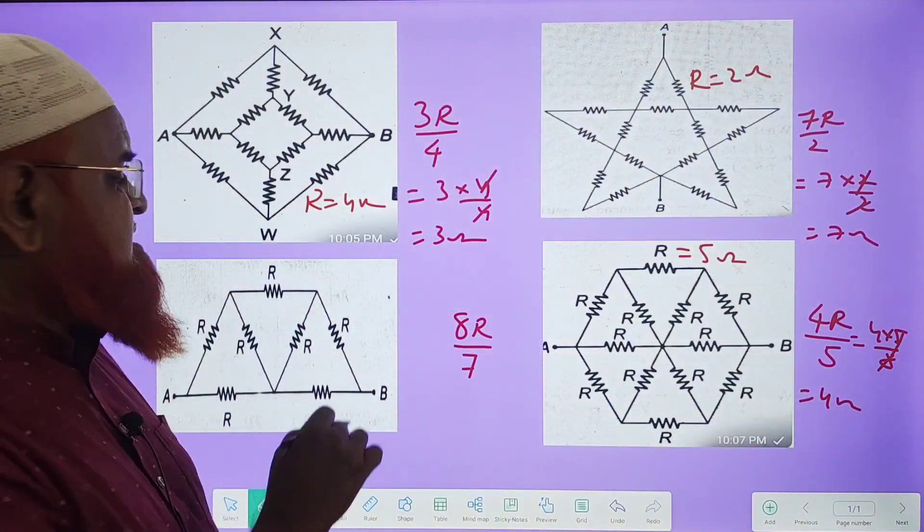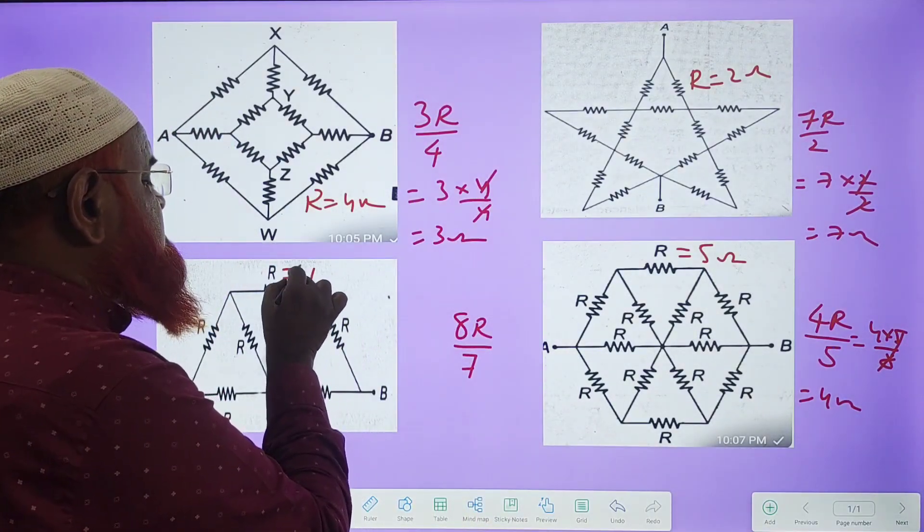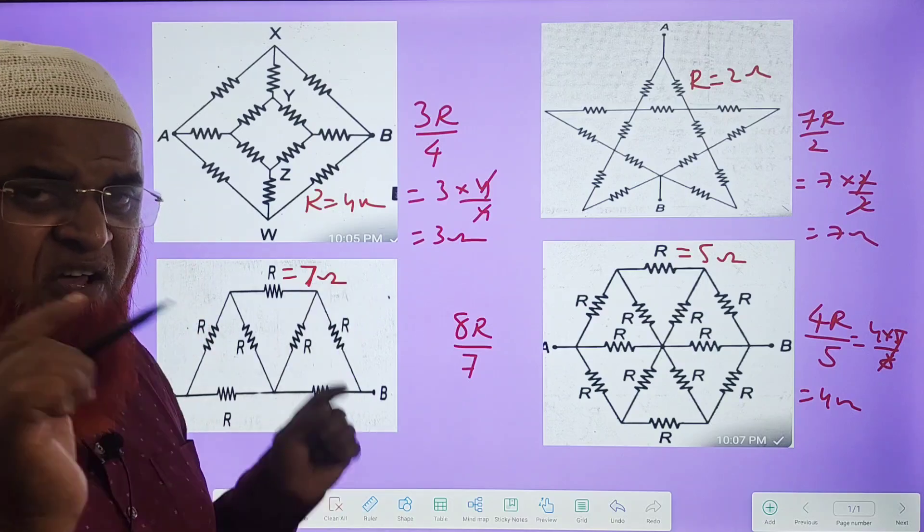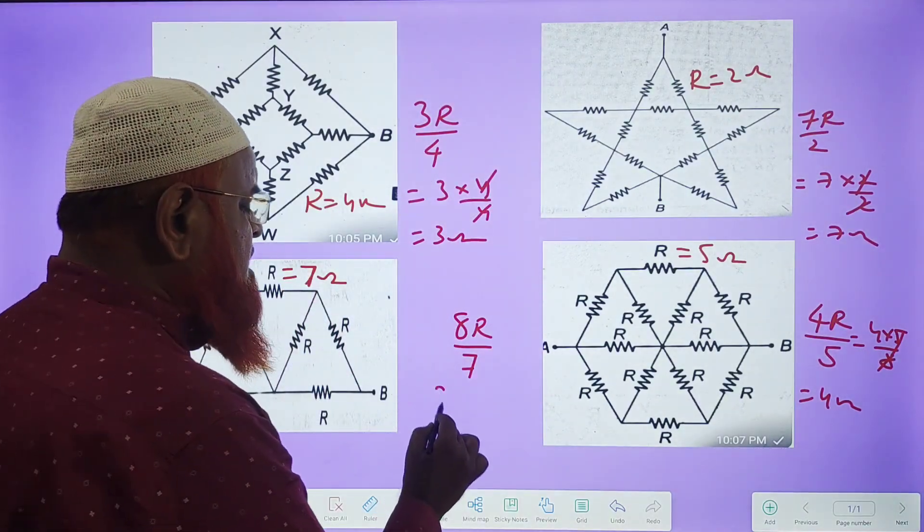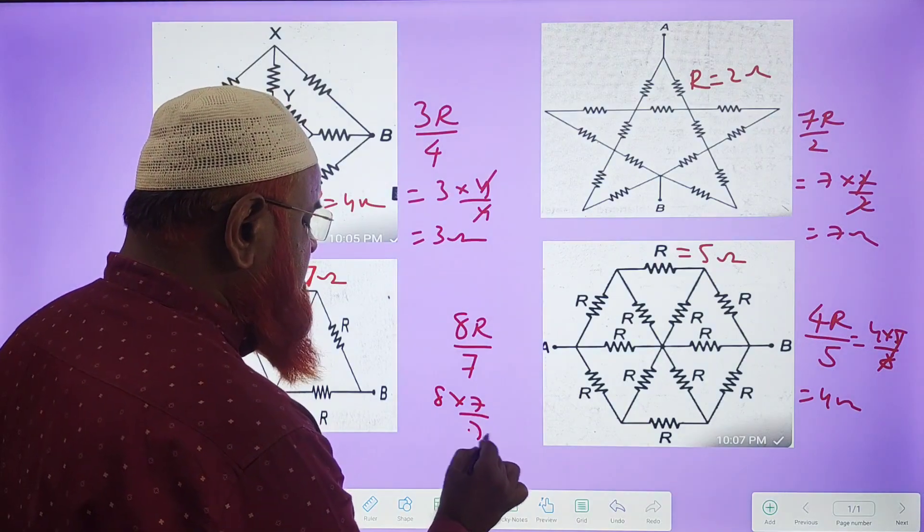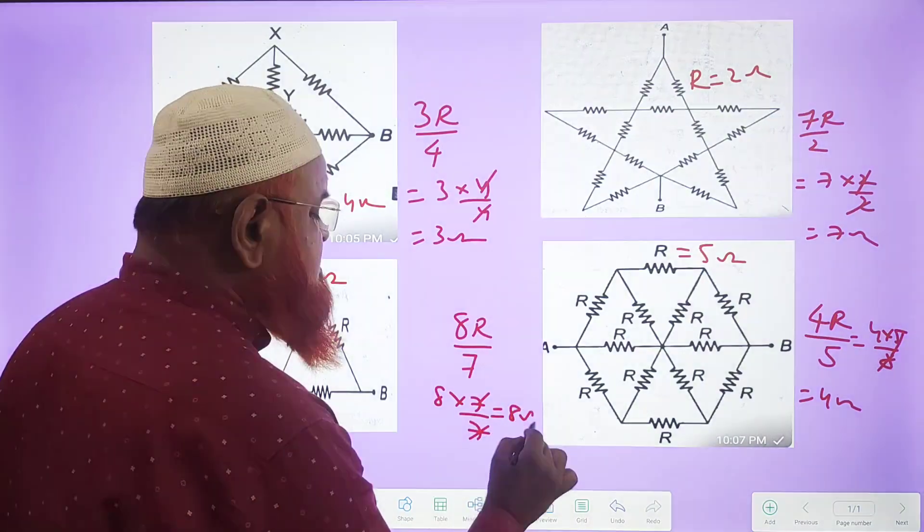Then in this circuit, for example, if the resistance is taken as 7 ohms, each and every resistance in the pyramid is taken as 7 ohms, the simple thing you have to do is 8 into 7 by 7. The 7s get cancelled. It is 8 ohms.